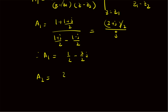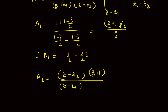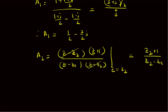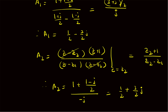Similarly, the second coefficient A2 will be equal to Z minus Z2 multiplied by Z plus 1, upon Z minus Z1 times Z minus Z2, with Z equal to Z2. Canceling the common factors, we are left with Z plus 1 by Z minus Z1, which gives Z2 plus 1 divided by Z2 minus Z1. Therefore, A2 will be equal to 1 plus Z2, that is 1 plus (1 minus J) by 2, divided by Z2 minus Z1, which is minus J. So the real part gives 1 by 2 and the imaginary part gives plus 3 by 2 J, making A2 equal to 1 by 2 plus 3 by 2 J. Obviously, A1 and A2 are conjugates of each other.